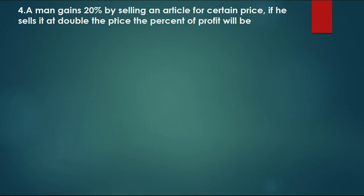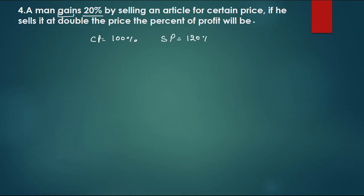Question 4: A man gains 20% by selling an article for a certain price. If he sells it at double the price, the percent of profit will be? This type of question often appears in railway exams like Group D. The man gains 20%, so CP = 100% and SP = 120%.